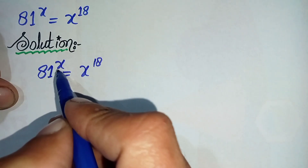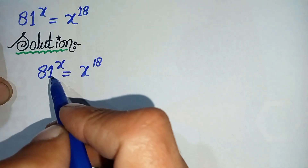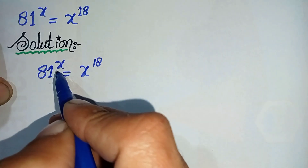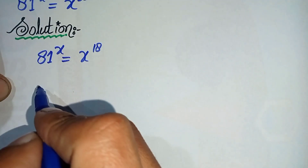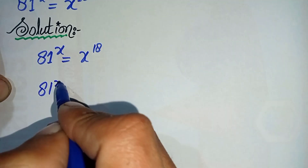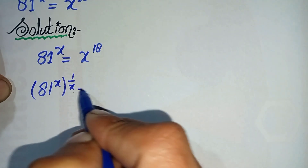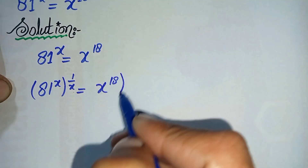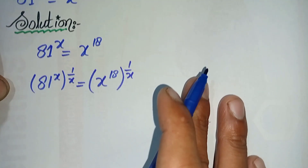To solve this question, first I will try to eliminate x from the left hand side. To eliminate x from the power on the left hand side, I will take 1 over x in the power on both sides. So it will become 81 raised to power x, raised to power 1 over x, is equal to x raised to power 18, raised to power 1 over x.